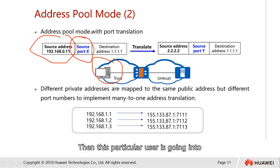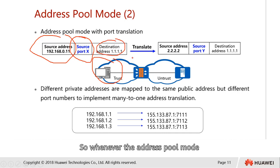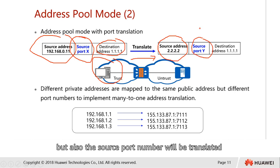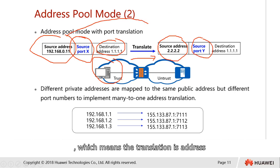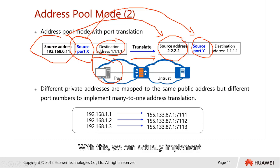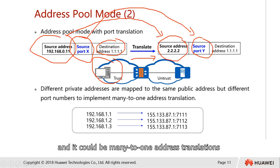This user is going to a destination address of 1.1.1.1. Whenever address pool mode with port translation is configured on our firewall, the translation will convert not only the source IP address from the pool, but also the source port number. The translation is address-to-address and source port-to-source port. The destination never changes. This allows different port numbers for different hosts and enables many-to-one address translation.